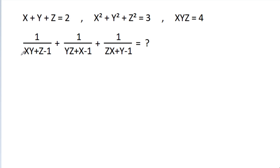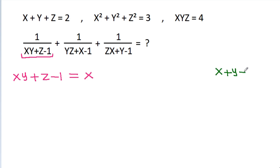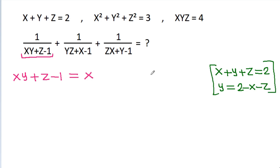So we have xy plus g minus 1. Since x plus y plus g equals 2, y will be equal to 2 minus x minus g. So y minus 1 equals 2 minus x minus g minus 1, which gives 1 minus x minus g.